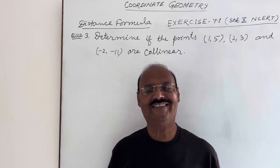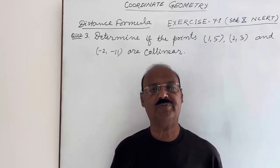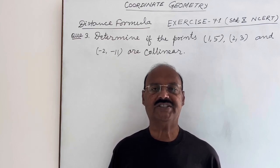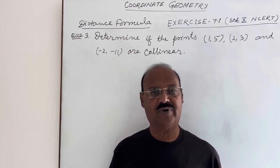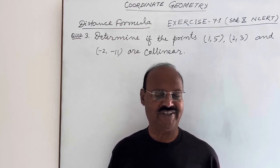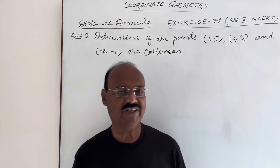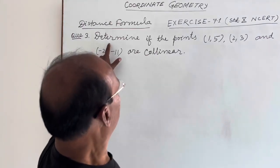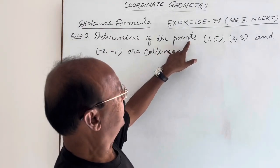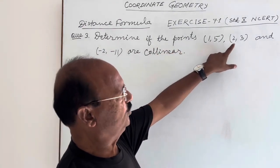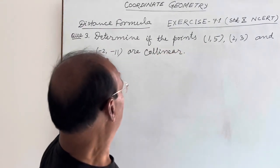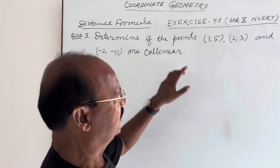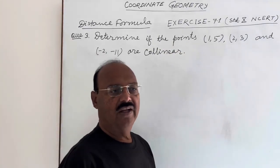Welcome students. Let us see question number 3 of Exercise 7.1 from the chapter Distance Formula of Coordinate Geometry. The question is: determine if the points (1, 5), (2, 3), and (−2, −11) are collinear.